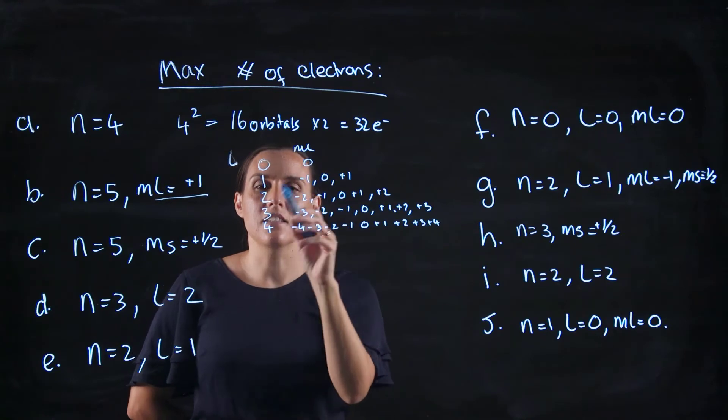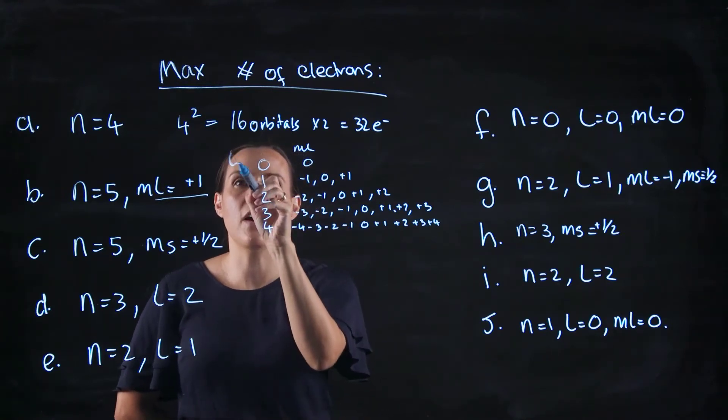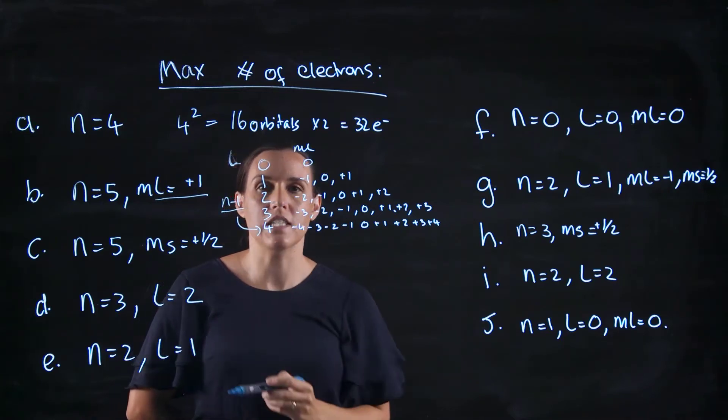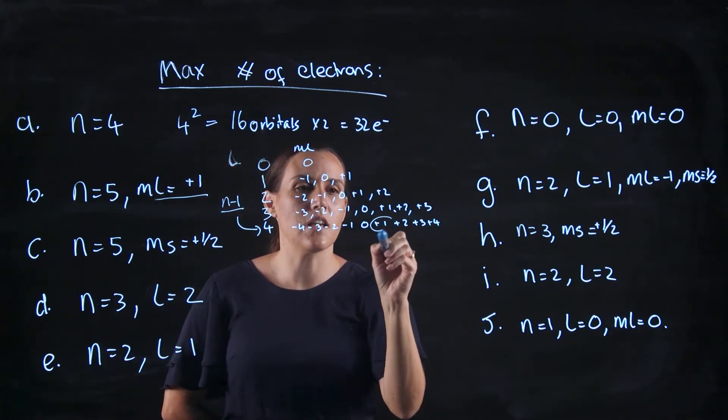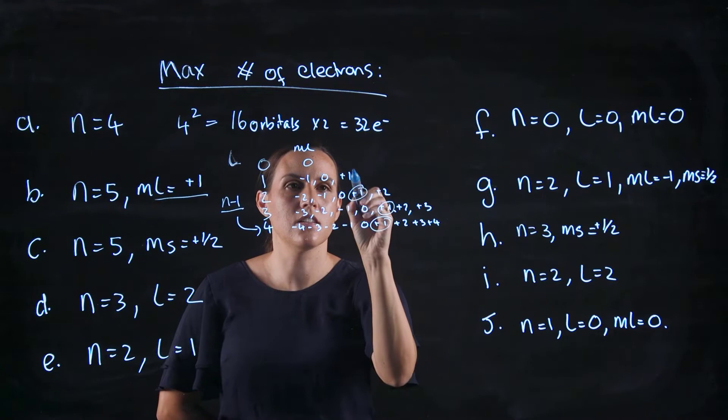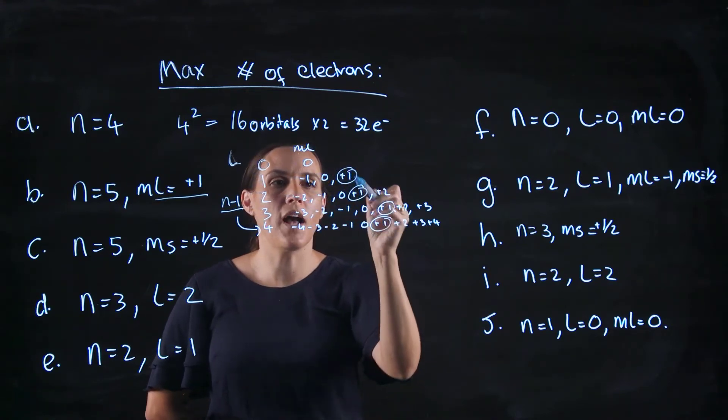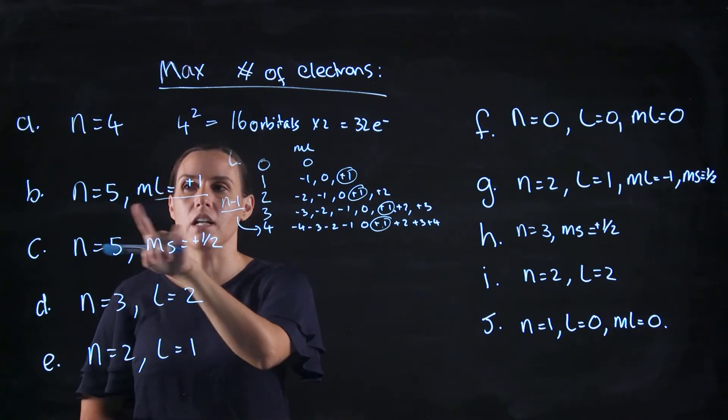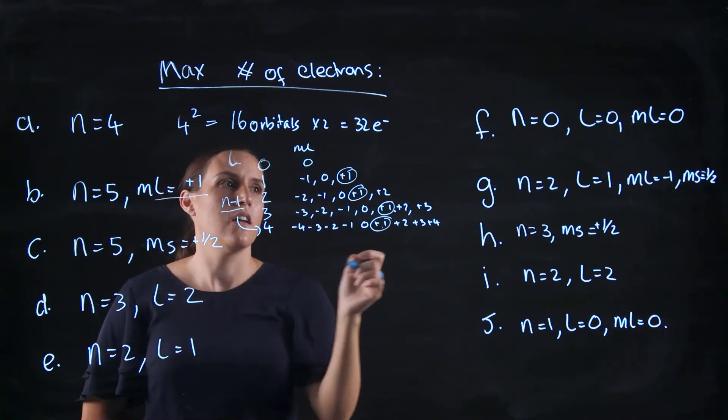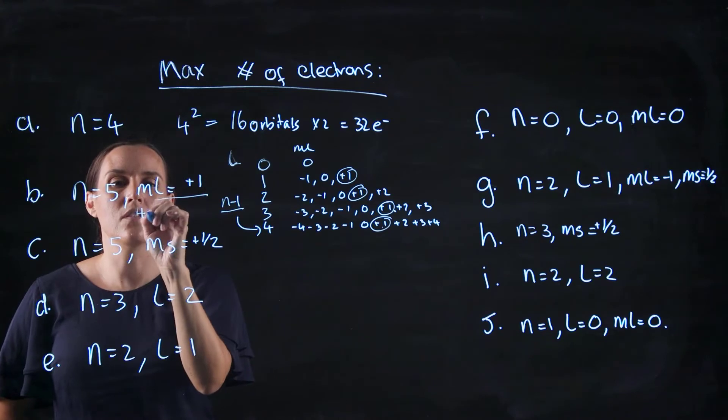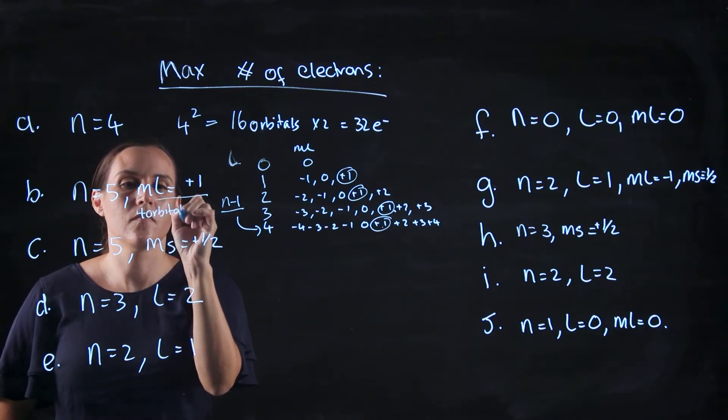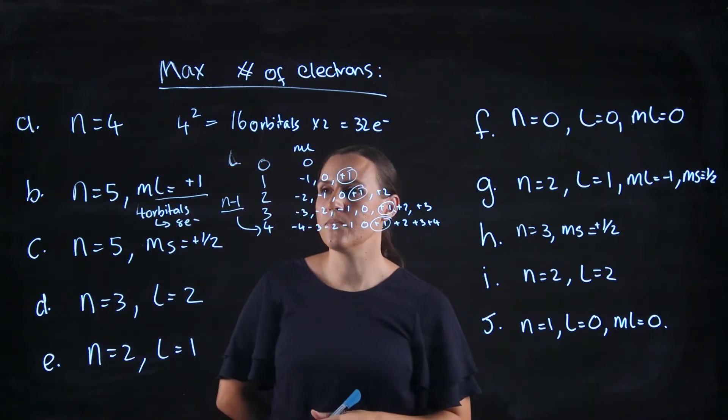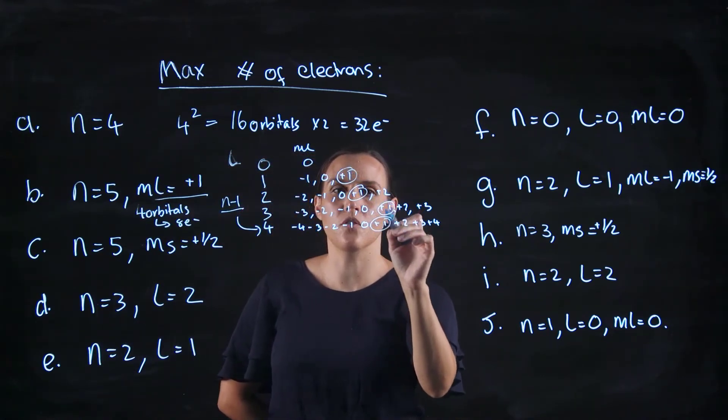So of these, remember the maximum l value you can get is n minus 1, so it would be 4 for this example. So then it's just looking at where are your plus 1s? So you've got 1, 2, 3, 4 orbitals that have ml of plus 1 if n equals 5. So it'd be 4 orbitals, 8 electrons.